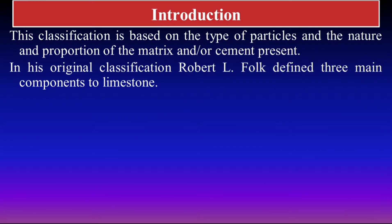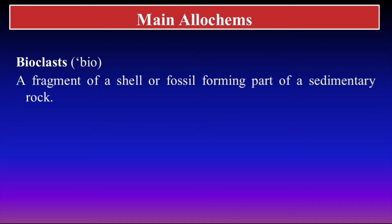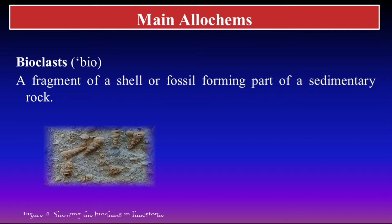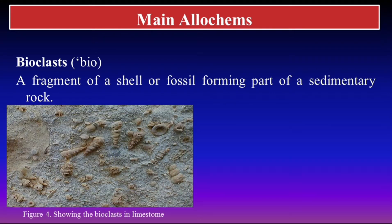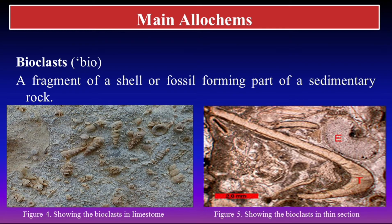The main allochems include bioclasts. A bioclast is basically a shell fragment or the broken piece of a fossil which makes up some part of the sedimentary rock. In this picture you can see the bioclasts in the limestone, and in the thin section it looks like this.